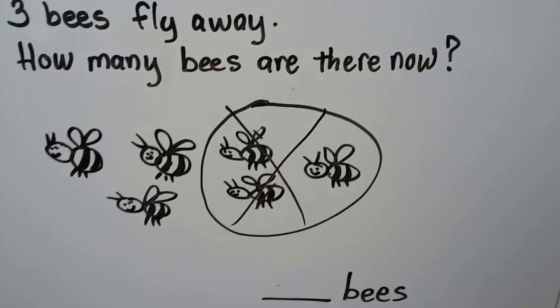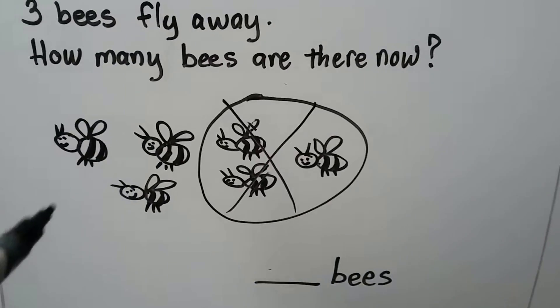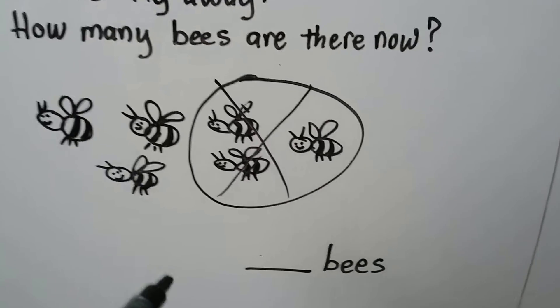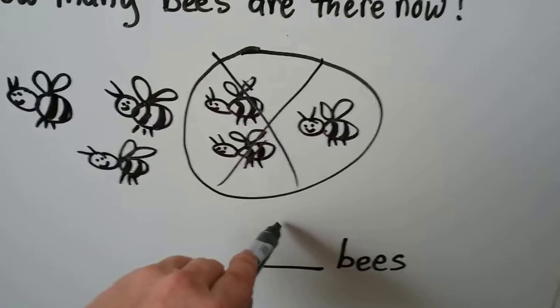How many bees are there now? One, two, three. Three bees.